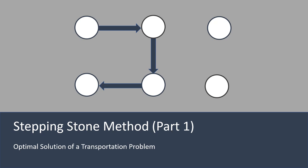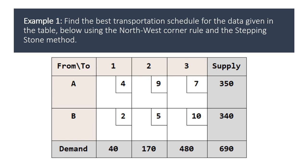In this lesson we look at an example of a transportation problem that is solved using the stepping stone method, starting from an initial feasible solution obtained using the north-west corner rule. The assumption is that you would have watched the other videos that describe the implementation of the stepping stone method and also the north-west corner rule in finding initial feasible solutions.